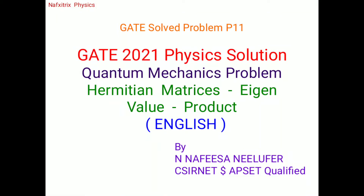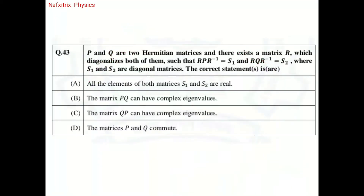Let's discuss a problem from GATE 2021 Physics, which is from quantum mechanics. It is related to Hermitian matrices, eigenvalues, product, and properties of Hermitian matrices. The problem states: if P and Q are two Hermitian matrices, there exists a matrix R which diagonalizes both of them, such that R P R⁻¹ = S1 and R Q R⁻¹ = S2.